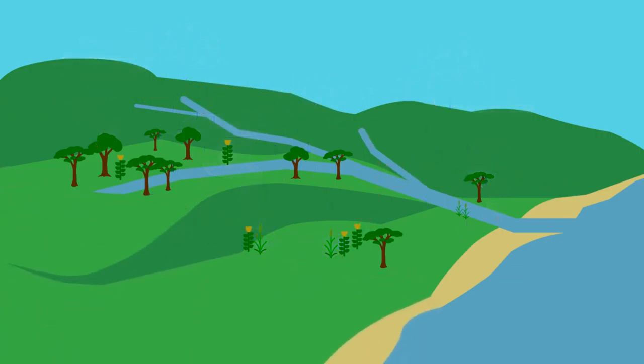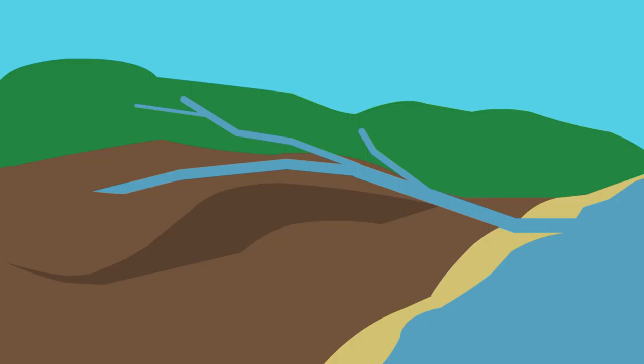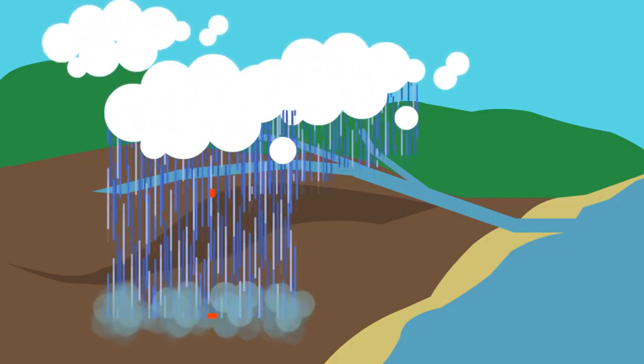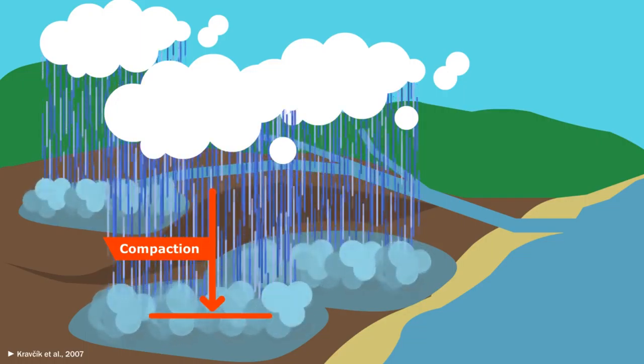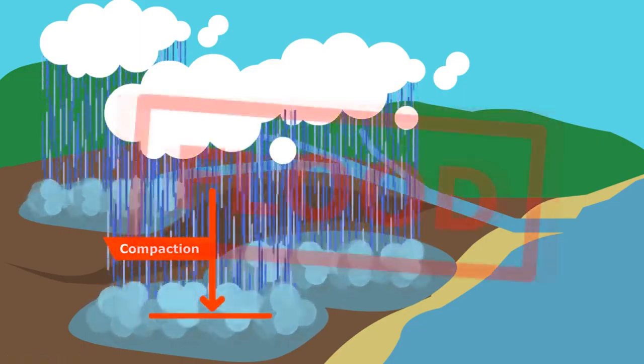So what happens if we cut down the forest, plow the grasslands, and expose the soil? Without trees or plants to buffer the rain, the heavy downpour compacts the soil. The water can't soak down into the compacted ground, so almost all of it stays above ground, and we have a flood.